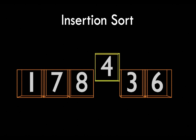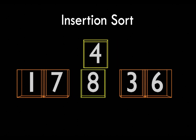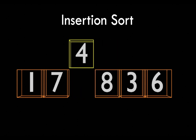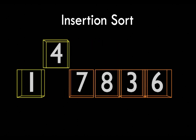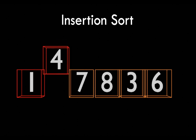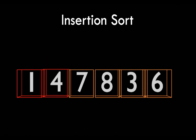Then we look at the fourth element, which is number four. That's compared to eight, so we have to make a swap because eight is greater than four. Seven is greater than four and one is less than four, so it has to be inserted in the second position.